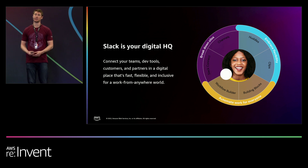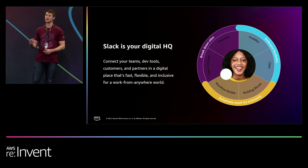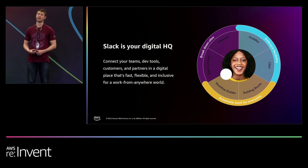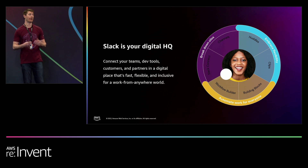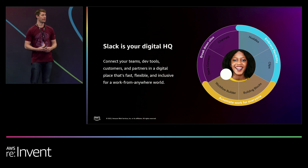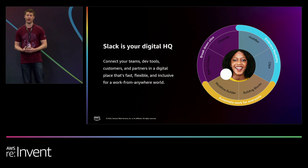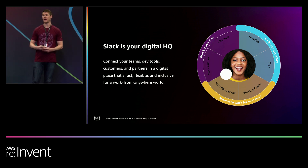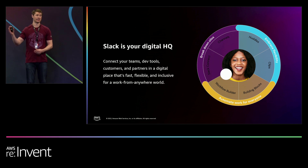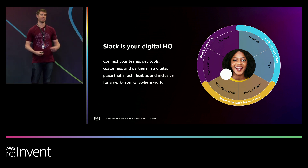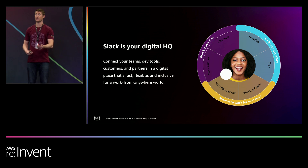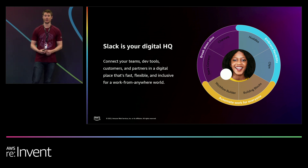We call Slack your digital HQ for engineering. First, it breaks down silos through channels so that no matter where you are in the org chart, you have that transparency and visibility. And Slack Connect extends this cross-functional collaboration to external parties — think vendors, third-party developers, even customers — in a secure space where you can work together.